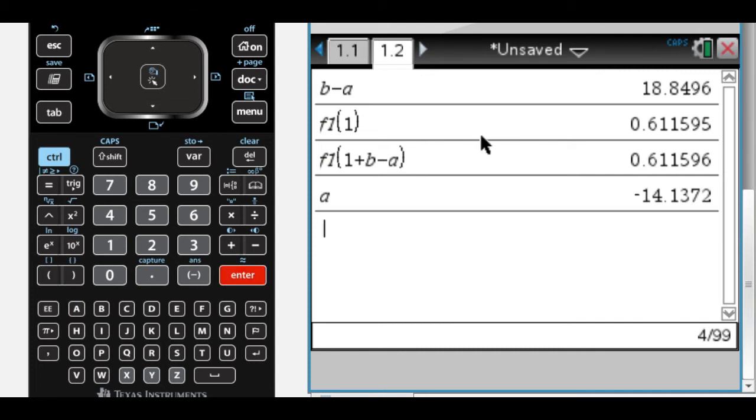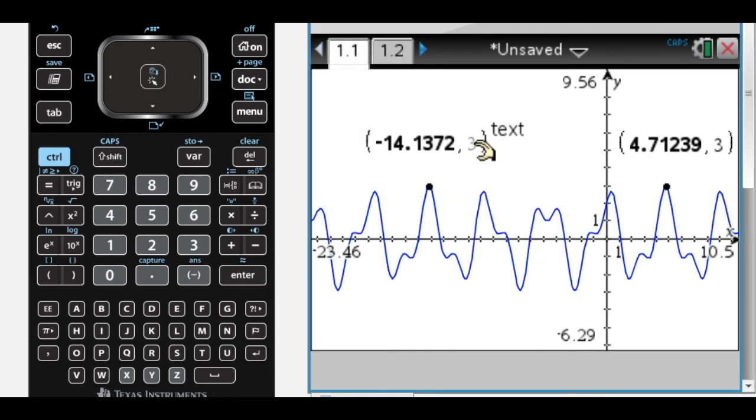Also, what's nice is I now have stored the maximum, well, the x-coordinate of the maximum. I haven't actually stored the y-coordinate. So what I want to do is go back and do that.